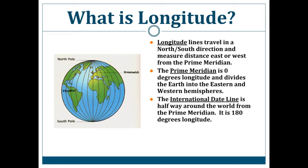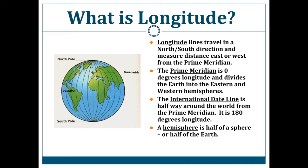The last definition I would like you to know is hemisphere. A hemisphere is half of a sphere, or half of the Earth. The eastern hemisphere goes from 0 degrees longitude at the prime meridian all the way to 180 degrees at the international dateline. Everything east of the prime meridian has an E after it and is in the eastern hemisphere; everything west has a W and is in the western hemisphere. Anything north of the equator is in the northern hemisphere; anything south is in the southern hemisphere.